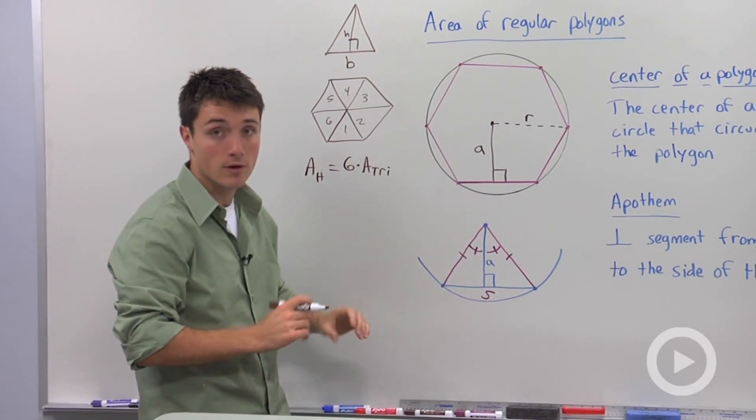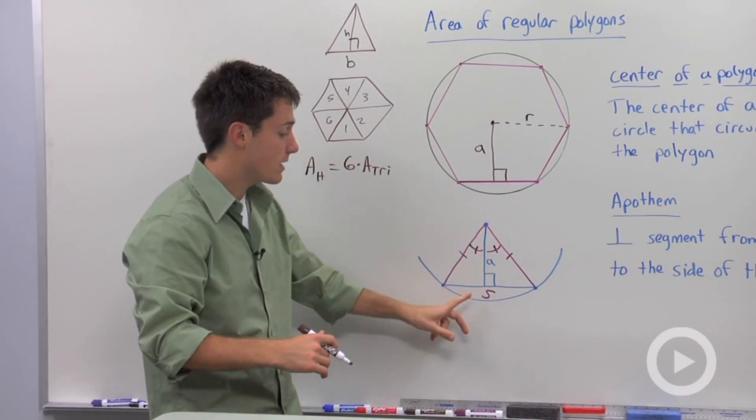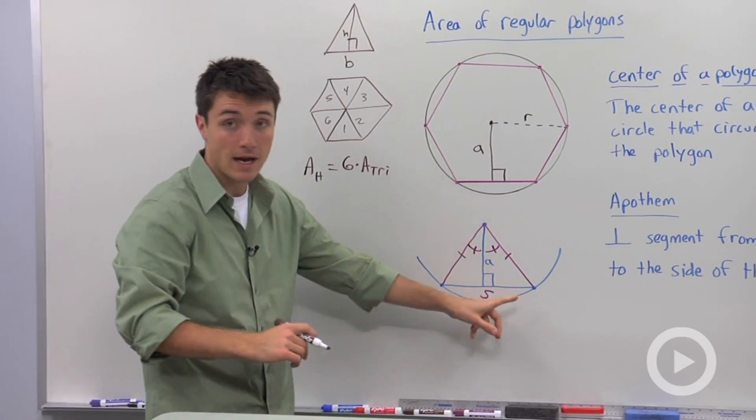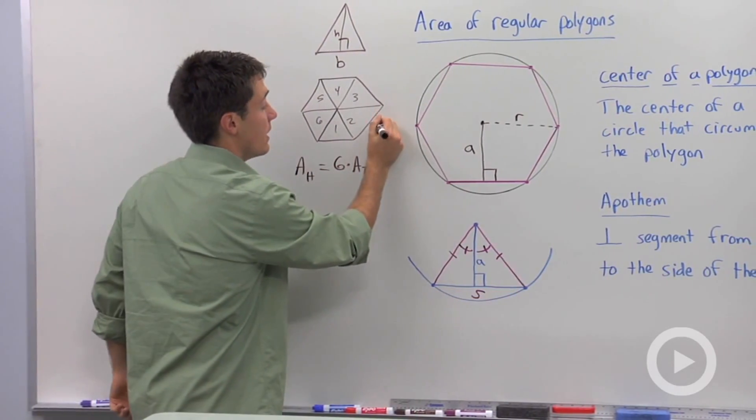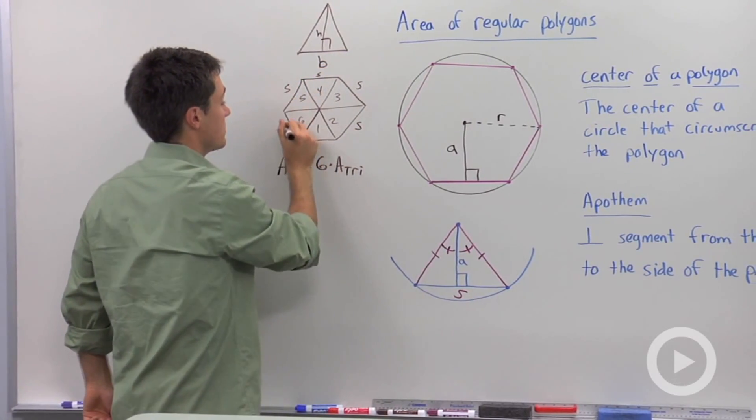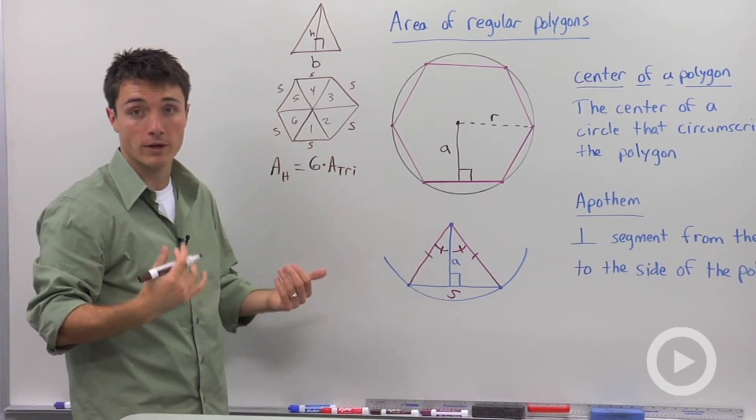So specifically for a polygon, we're going to call this A, and we're going to call that base S, where if we go back here, S is our side length. So notice that the sides will all be the same for a regular polygon.